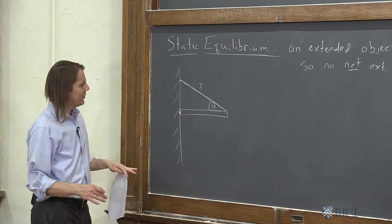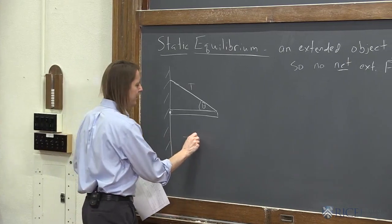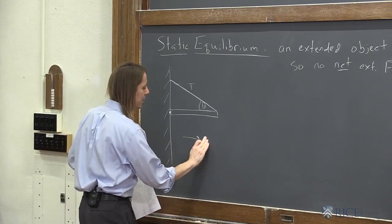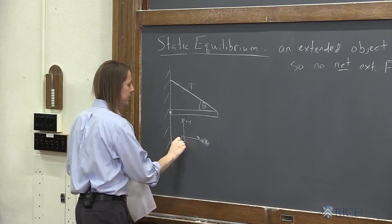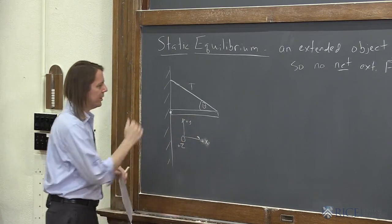So if we want to look at this, let's define a coordinate system here. Let's make it x in that direction, y in that direction. So z would be out of the board, right? x, y, z.